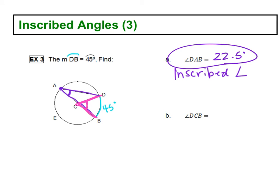Because the vertex is at the center of the circle, that's a central angle. We know that central angles are equal to the arc measure. The arc formed by that angle is DB, which is 45 degrees, so the central angle will match that and also be 45 degrees.